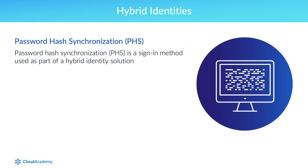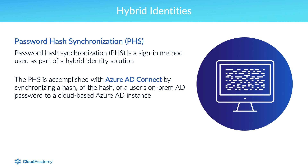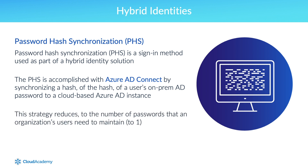Password hash synchronization is a sign-in method used as part of a hybrid identity solution. This is accomplished with Azure AD Connect by synchronizing a hash of the hash of a user's on-prem AD password to a cloud-based Azure AD instance. This feature is useful for signing into Azure AD services like Office 365 with the same password as an on-prem AD account, which reduces end-user impact and can improve user productivity and reduce help desk costs.